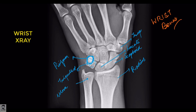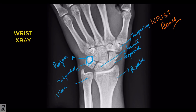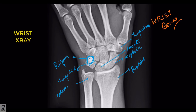Then we come to the distal row of the carpal bones, which starts with the trapezium — just below the first metacarpal, where your thumb is. Just next to it is the similarly-sounding trapezoid bone. The way to remember is: trapezium and then trapezoid. Next to that, this big bone kind of in the middle is the capitate.